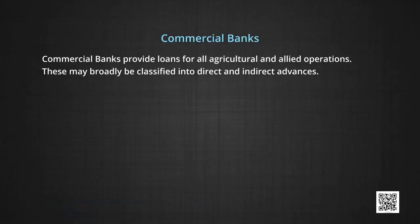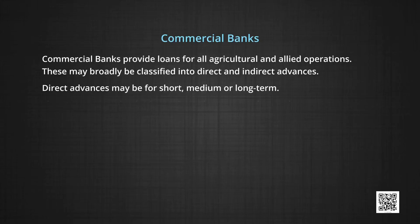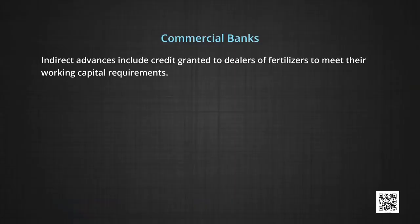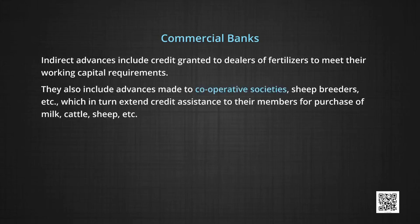The role of commercial banks in providing rural credit: commercial banks provide loans for all agricultural and allied operations, broadly classified into direct and indirect advances. Direct advances may be short, medium or long term. Short-term may take the form of crop loans or production loans, which have to be repaid within one to two months after the harvest of crops. Medium and long-term loans are granted for capital-intensive development programs, with a maximum repayment period of 15 years. Indirect advances include credit granted to dealers of fertilizers to meet their working capital requirements, and advances made to cooperative societies.